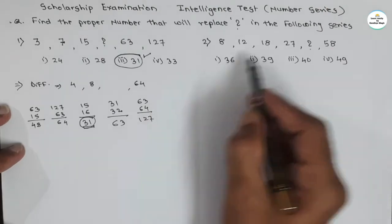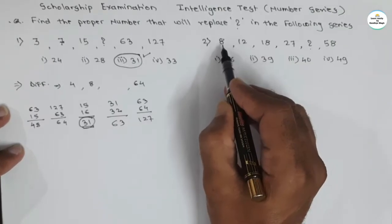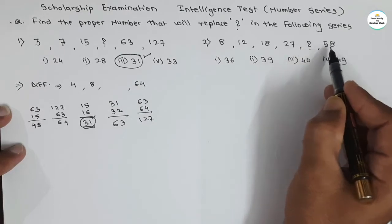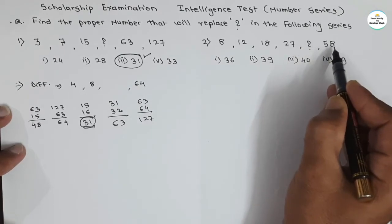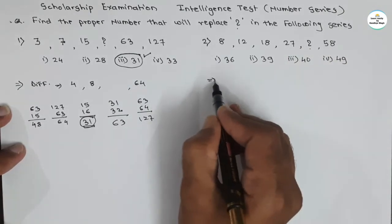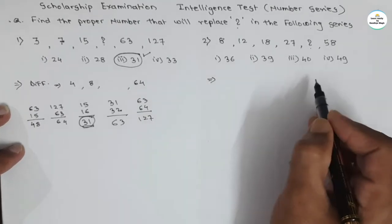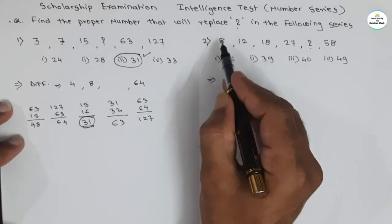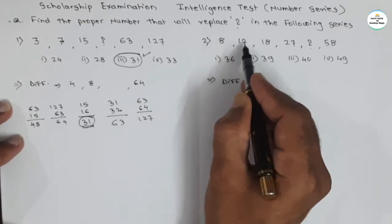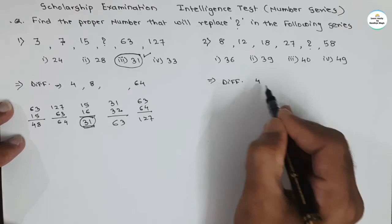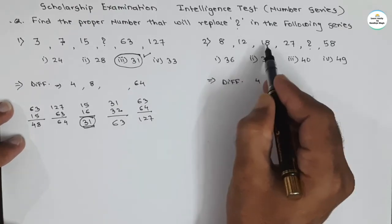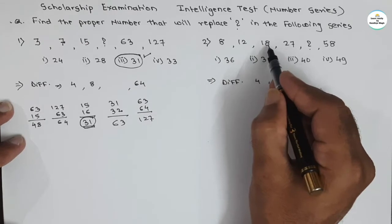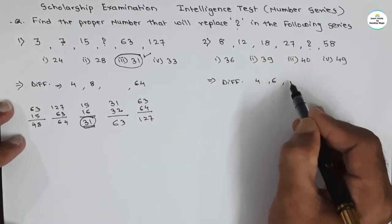Now see the next series. The series is 8, 12, 18, 27, question mark, 58. We will try our solution by finding the differences first. The difference between 8 and 12 is 4. Then, 12 and 18: the difference is 6. Then, 18 and 27: the difference is 9.